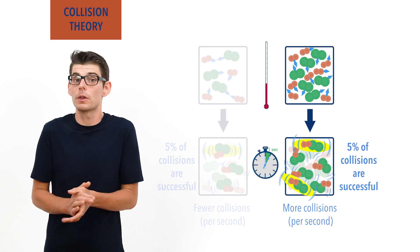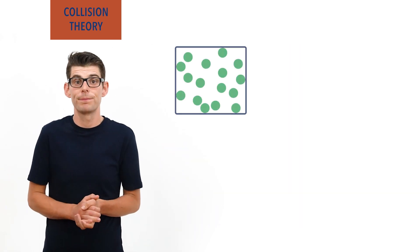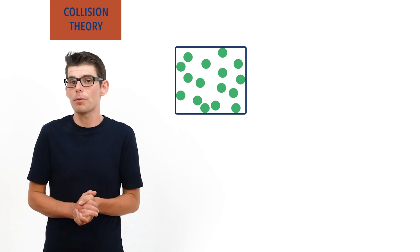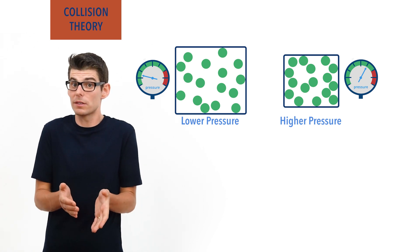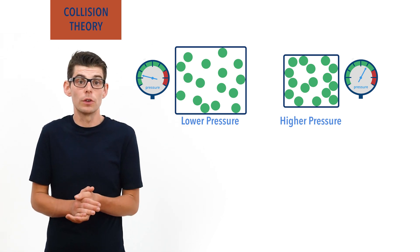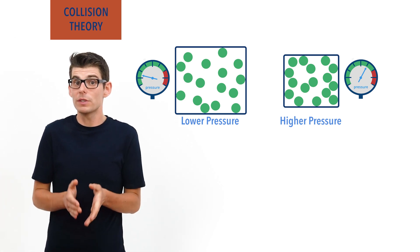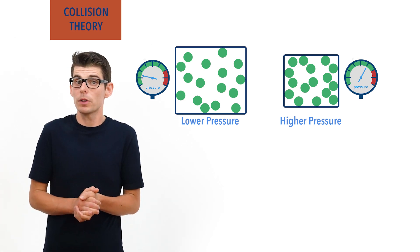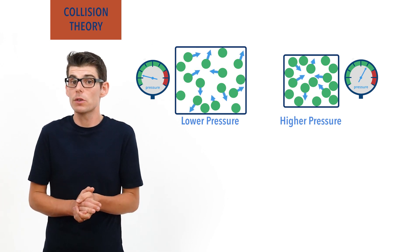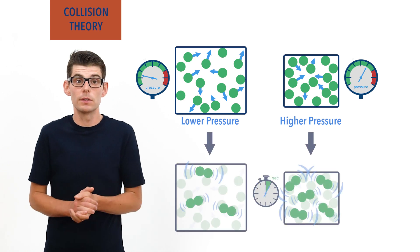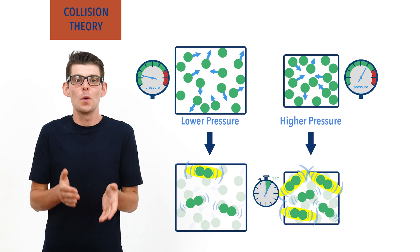This same outcome can be achieved by changing the pressure of a system of gas particles. By increasing the pressure, more particles end up in a smaller volume, which has the same effect as increasing concentration. Increasing the number of particles in a given volume increases the chances of particles bumping into each other, and the total number of collisions occurring per second increases, which means the frequency of successful collisions also increases.